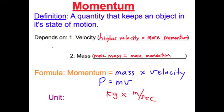Momentum is a quantity that keeps an object in state of motion. It depends on the velocity and the mass. The higher the velocity, the more momentum. The higher the mass, the more momentum.